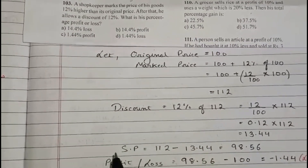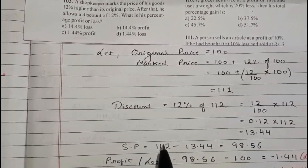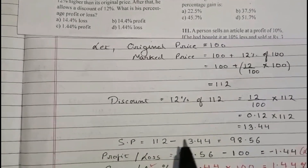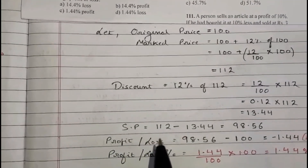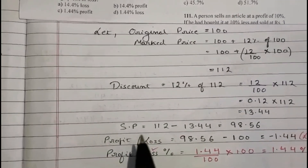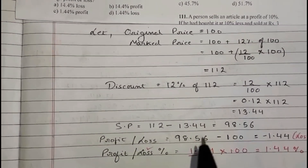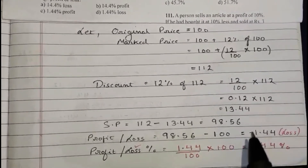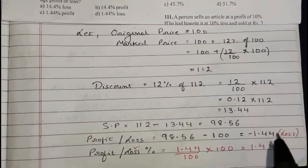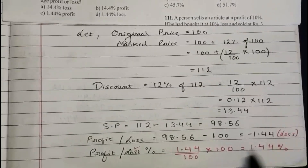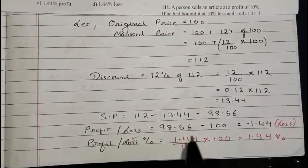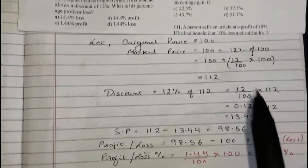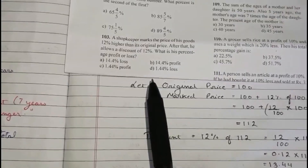The selling price will be 112 minus the discount. That is the marked price subtracted by the discount, giving 98.56. Subtracting the selling price from the original cost price: 98.56 minus 100 gives minus 1.44, which is a loss. Hence the loss percentage is 1.44 divided by 100 into 100, which equals 1.44%. Hence option D is the right answer.